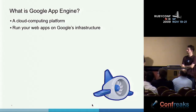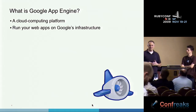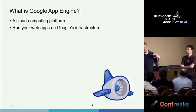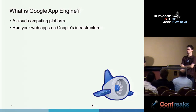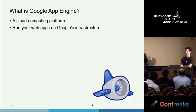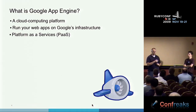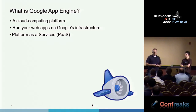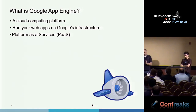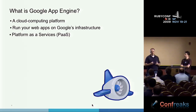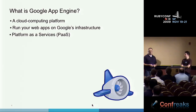It is a cloud computing platform, which means you can run your web app on Google's infrastructure. Google spends a lot of time and energy figuring out how to build efficient hardware, data centers, and scalable applications. App Engine is a way for Google to provide some of that to you. We also provide platform as a service, so unlike traditional hosting environments with infrastructure, boxes, networking, load balancers, and logging, you basically just give us your code and we run it for you. We bring up as many instances as you need.